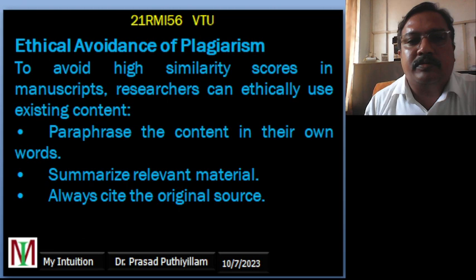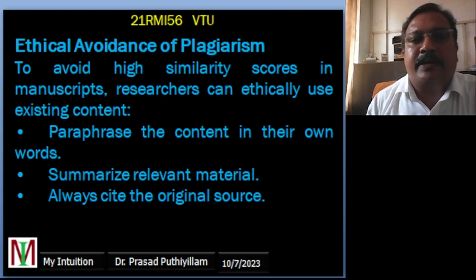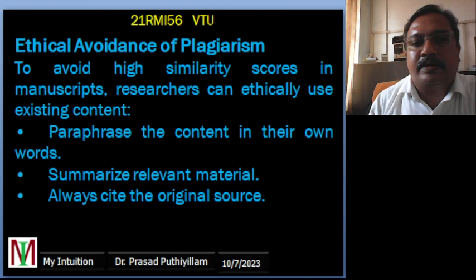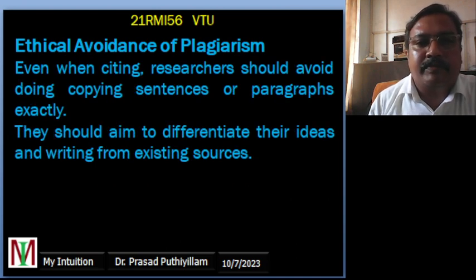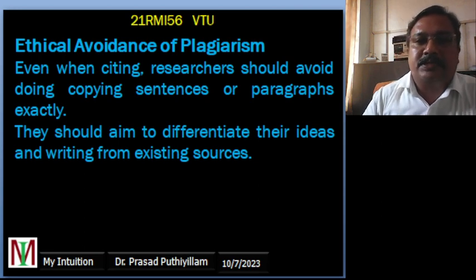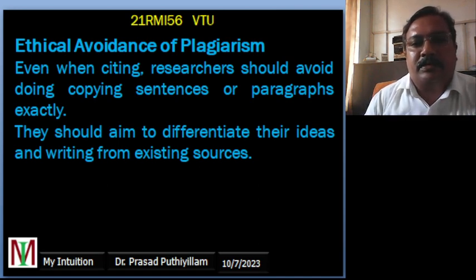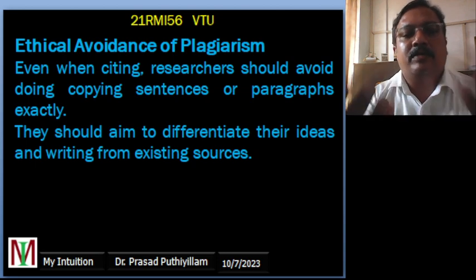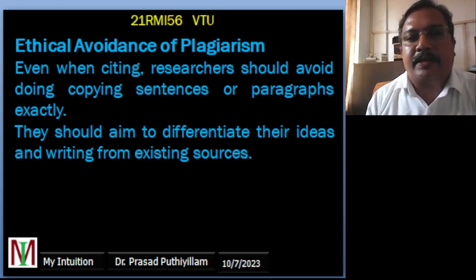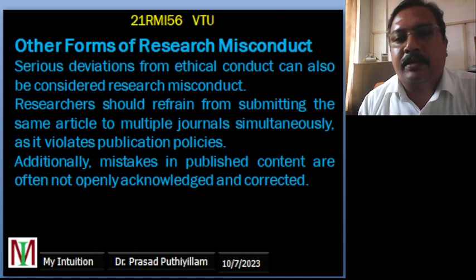On the ethical avoidance of plagiarism — to avoid a high similarity score in a research paper, researchers should ethically use existing content by paraphrasing in their own words, summarizing relevant materials, and always citing the original source. Even when citing, avoid copying sentences or paragraphs exactly. Researchers should aim to differentiate their ideas and writing from existing sources — understand how others did their work, take inspiration from the idea, but present it in your own way rather than rephrasing copied text.